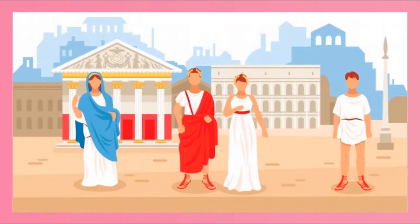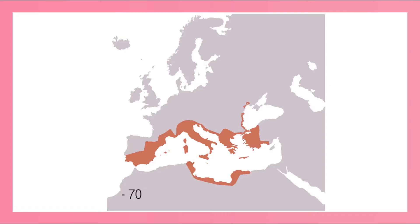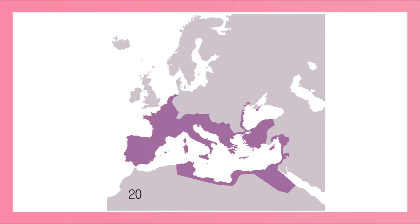Roman numerals were invented by ancient Romans in 500 BC as a way to represent numbers and do basic math like addition and subtraction. As the Roman Empire spread, so did the use of Roman numerals, until much of Europe and North Africa was using Roman numerals to represent numbers. In this lesson, we're going to learn how to read and write Roman numerals and some general rules these symbols follow.